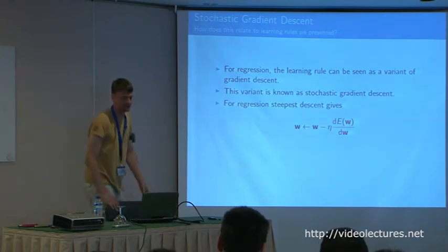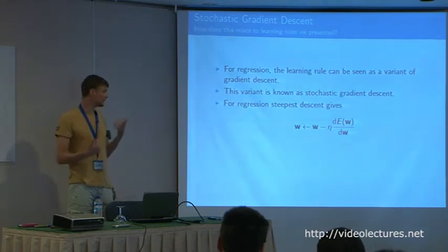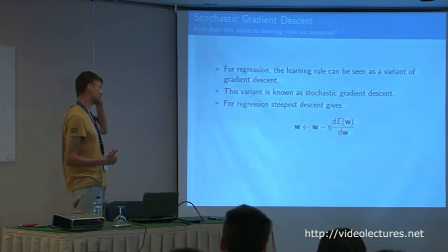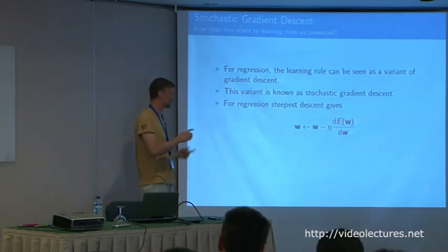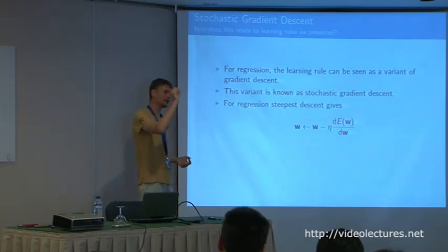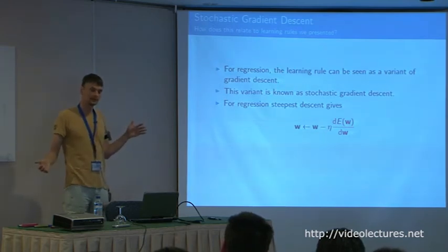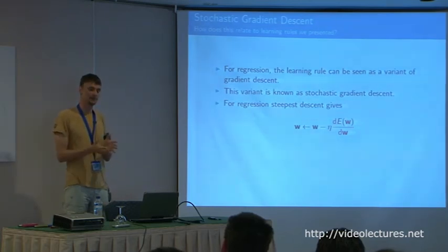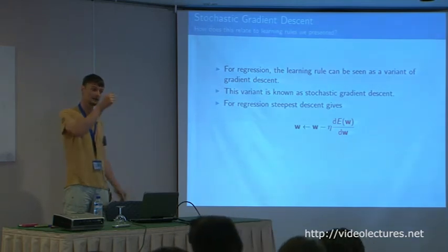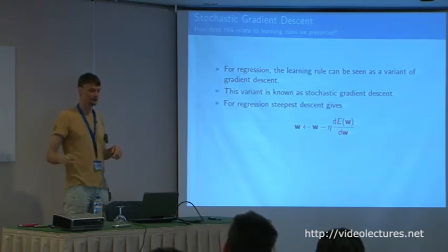Stochastic gradient descent is something machine learning people started doing back in the 1990s and do enormously now. The reason is it gives much faster solutions for very large datasets. Instead of summing the gradient over all N data points, you take one data point, look at its error, and update your weight function according to that. This works very well if you've got 25 million data points — you don't need to compute the full gradient sum.